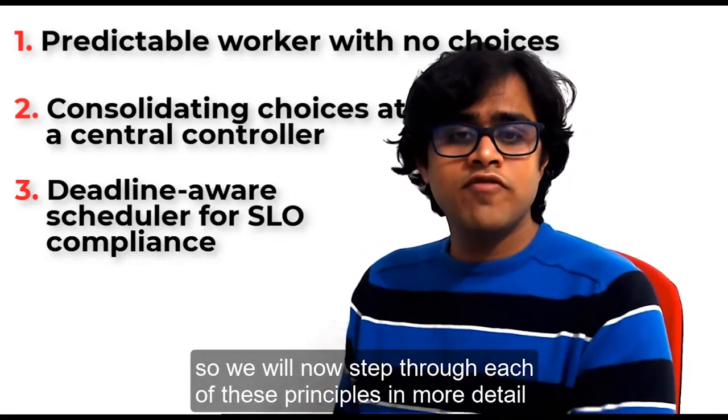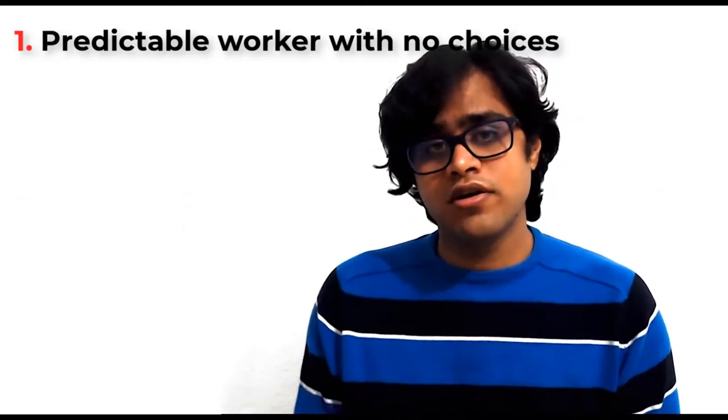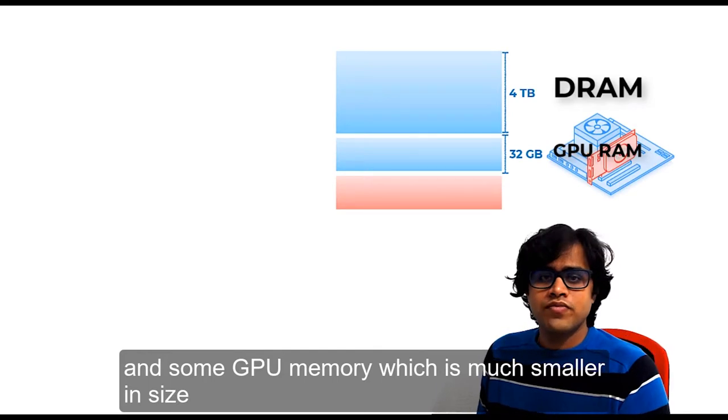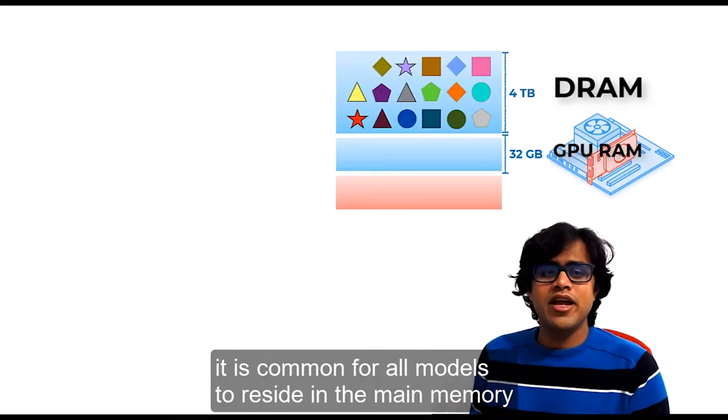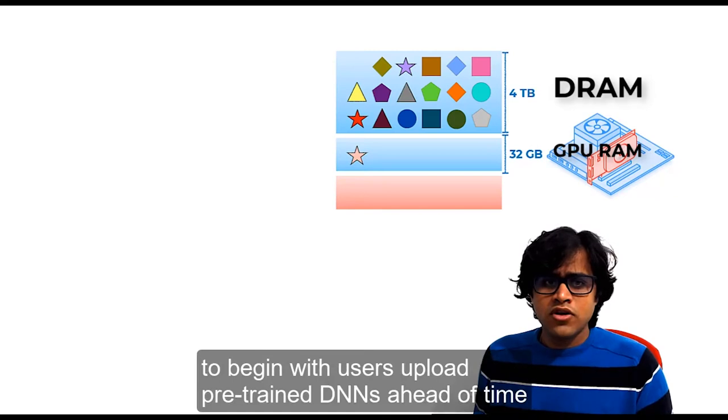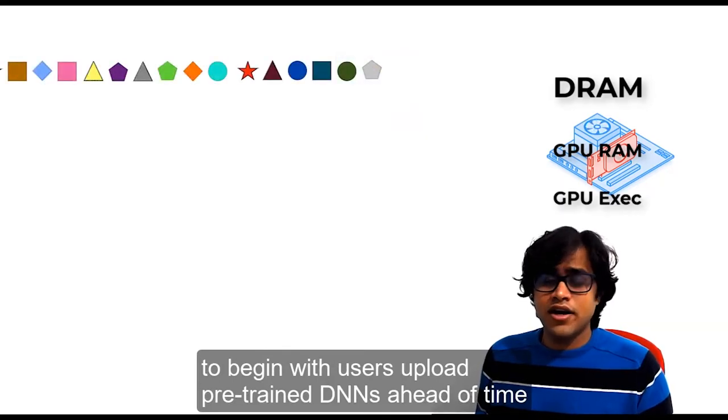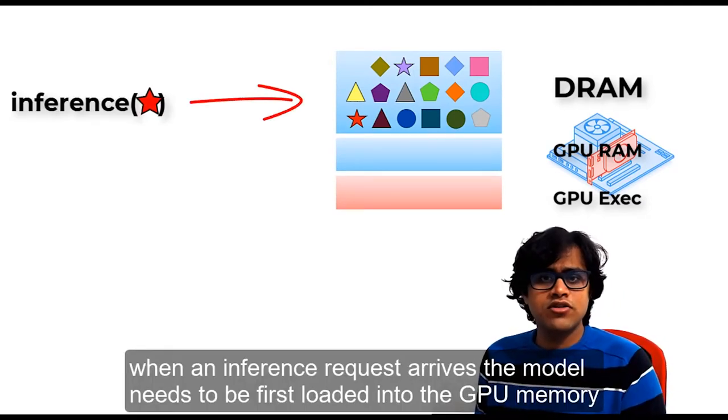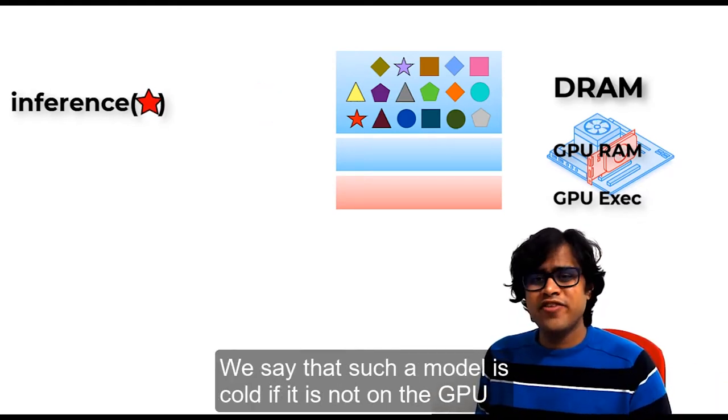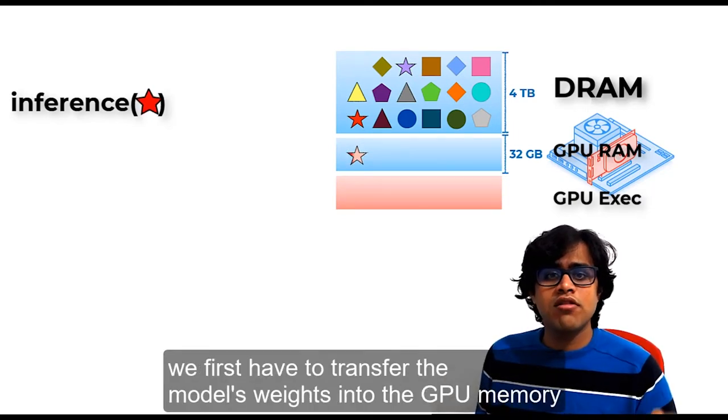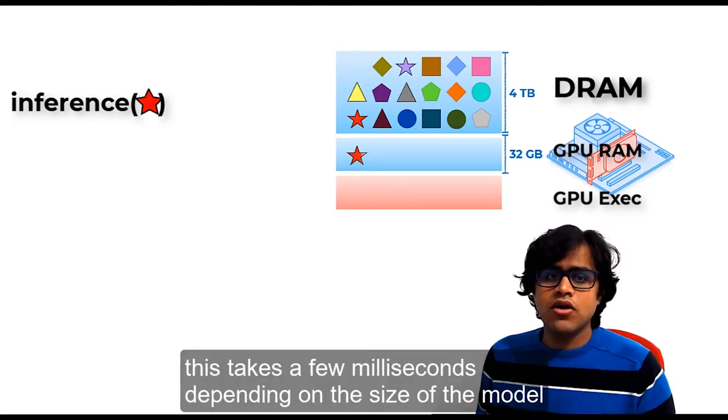We will now step through each of these principles in more detail, starting with building a predictable worker. We can think of a worker node as comprising a main memory, which is typically few terabytes in size, and some GPU memory, which is much smaller in size. It is common for all models to reside in main memory and for the frameworks to use GPU memory as a cache and switch models in and out depending on their demand. To begin with, users upload pre-trained DNNs ahead of time which reside in main memory. When an inference request arrives, the model needs to be first loaded into GPU memory. We say that such a model is cold if it is not on the GPU. To execute a cold inference, we first have to transfer the model's weights into GPU memory. This takes a few milliseconds depending on the size of the model.